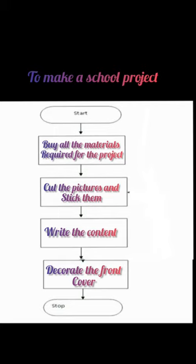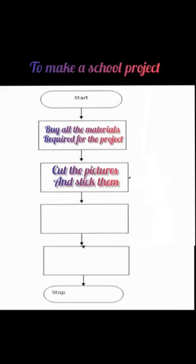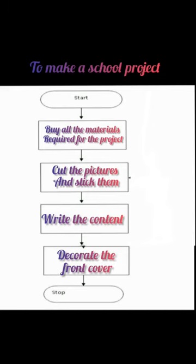Thus, a flowchart always helps to perform a particular task in the correct sequential order more accurately. Students, everyone understood this chapter on algorithms and flowcharts. So now tell me the flowchart to make the school project. First, buy all the materials required for the project; second, cut the pictures and stick them; third, write the content; and fourth, decorate the front cover.